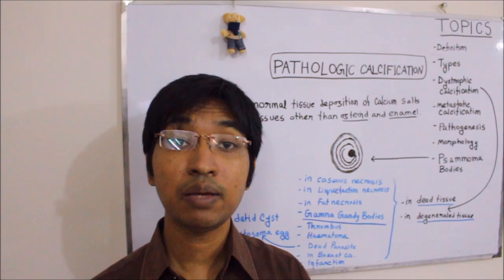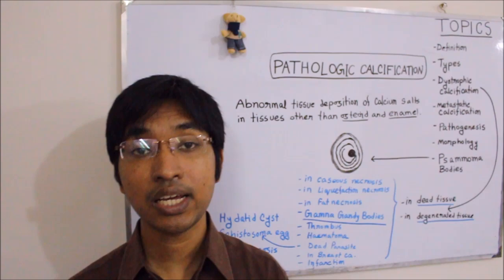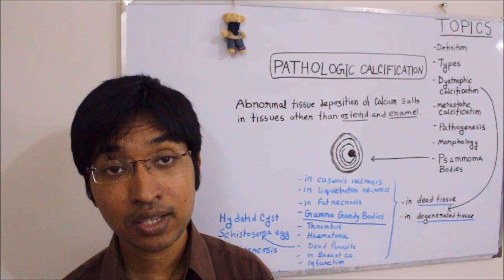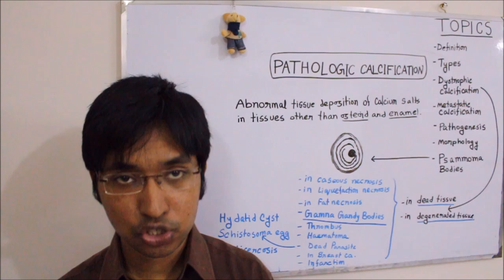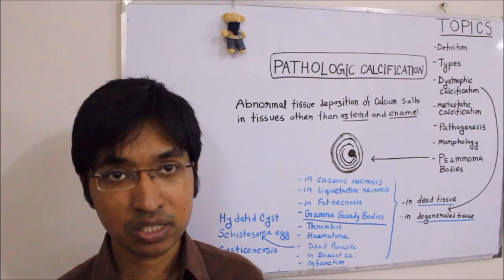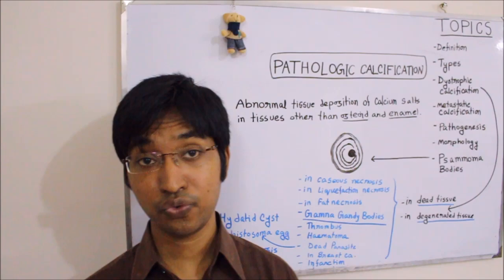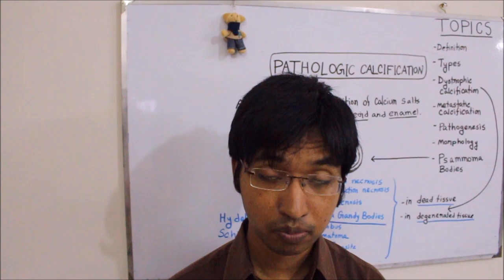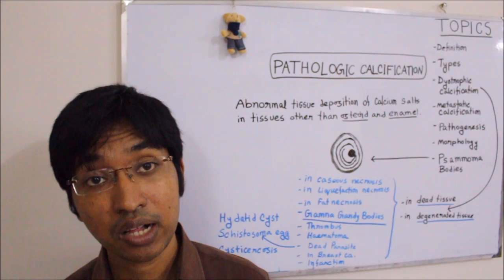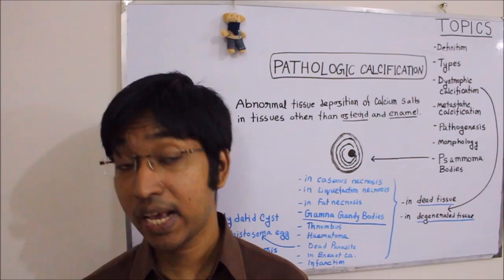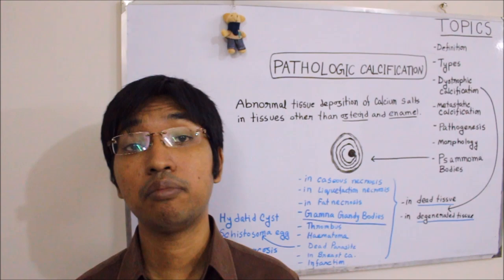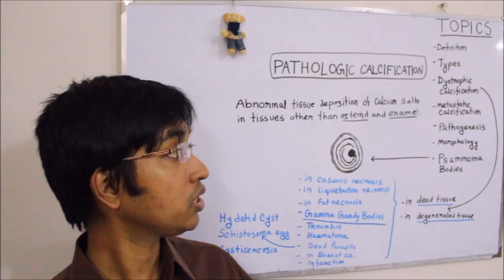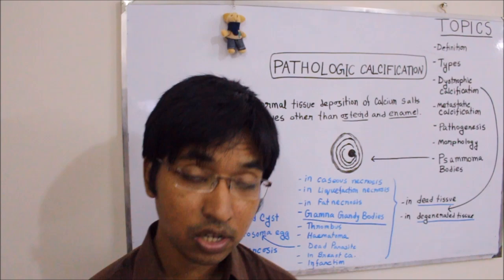The first point of difference is the type of tissue. Dystrophic calcification is seen in dead, dying, or degenerated tissue, whereas metastatic calcification is seen in normal living tissue. The second difference is regarding serum calcium level. In dystrophic calcification, serum calcium level remains normal and there is no abnormality in calcium metabolism. Whereas in metastatic calcification, the serum calcium level is always raised, secondary to some abnormality in calcium metabolism.